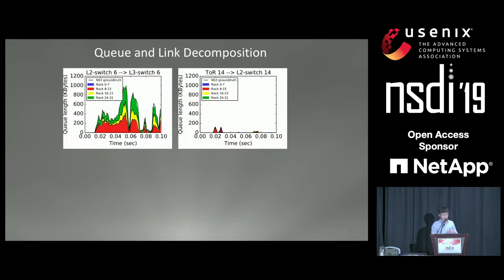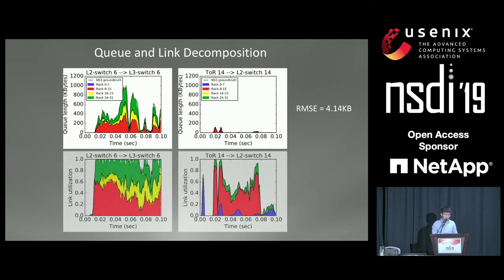These are the reconstruction results compared to simulation ground truth. Instead of breaking things down by individual flows, we break them down by destination racks. The black curves are the simulation ground truth for different classes of traffic, and the color fillings are the reconstruction results. The reconstruction is pretty accurate — accurate to a couple of MTU-sized packets. The two additional figures show reconstruction of link utilizations for the same queues, and the reconstruction error is within one percent of the link utilizations.